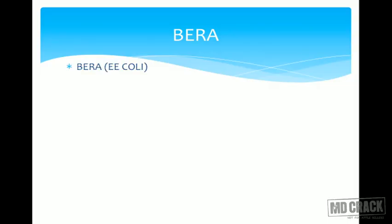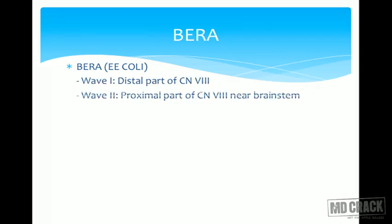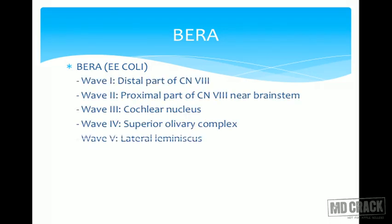BERA (brainstem evoked response audiometry) has waves I through VII originating from different parts of the auditory pathway. The mnemonic is 'E. coli': Wave I — distal eighth cranial nerve; Wave II — proximal eighth cranial nerve near the brainstem; Wave III — cochlear nucleus; Wave IV — superior olivary complex; Wave V — lateral lemniscus; Waves VI and VII — inferior colliculus.